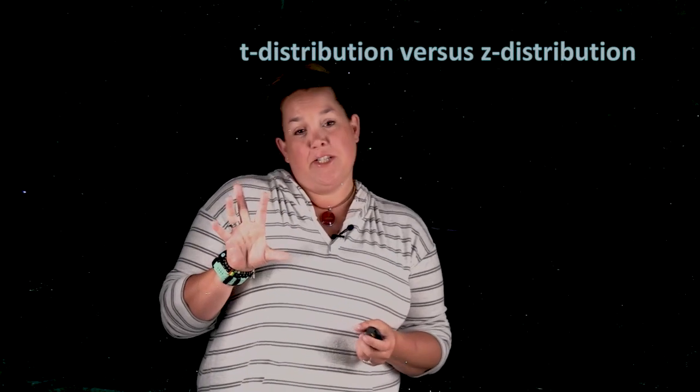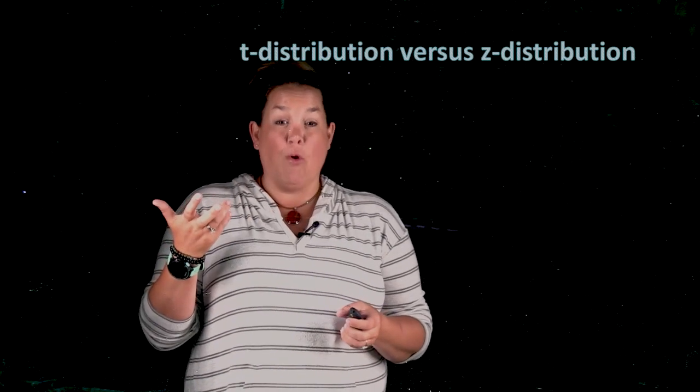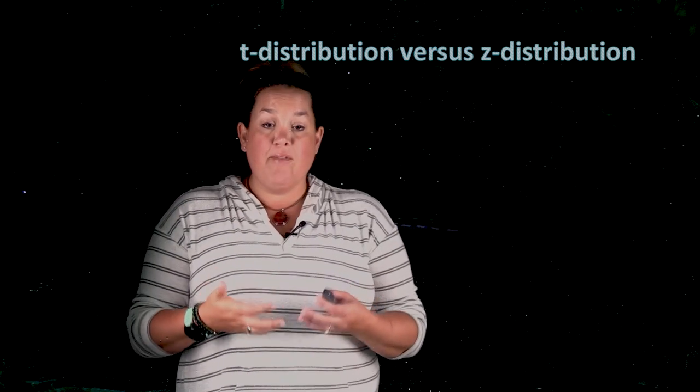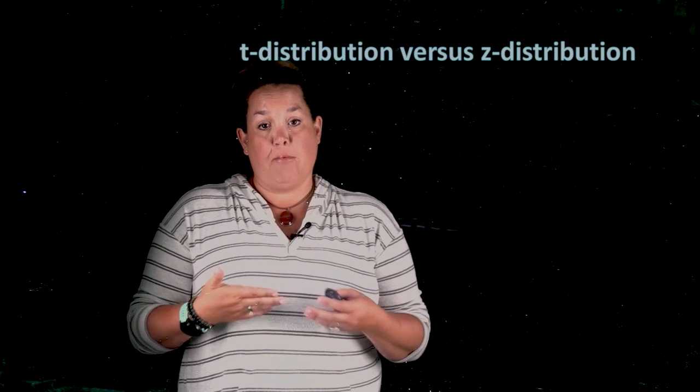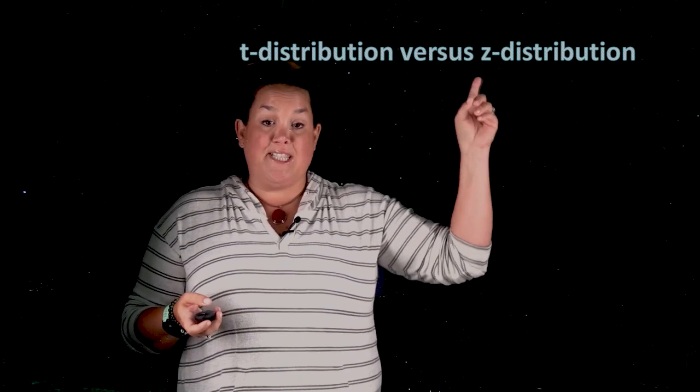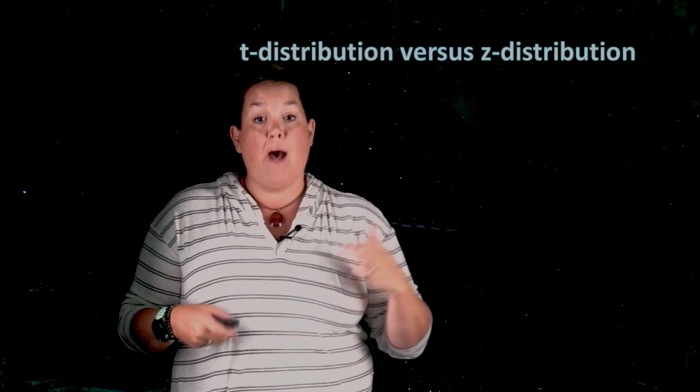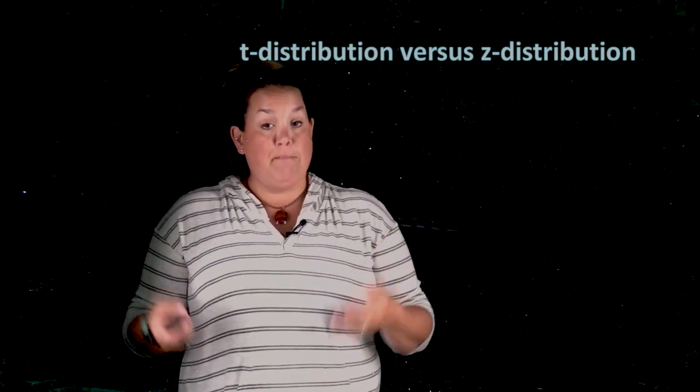When we use the t-distribution, we're going to be using it for one population mean, creating a confidence interval for that specific parameter. When we use the z-distribution, we use that for a confidence interval for one population proportion, or a p.